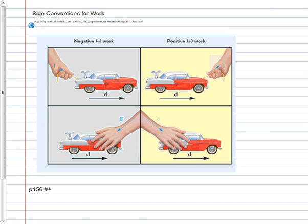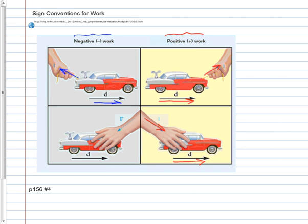Conceptually: positive work means I have a component of my force in the same direction as the motion — I'm helping it along. Negative work means we're working against the motion. If my motion is to the right and the component of my force is in the opposite direction, that's negative work — I'm working against the displacement. So: negative work works against the displacement; positive work works with the displacement.